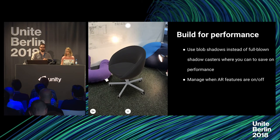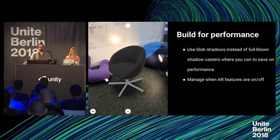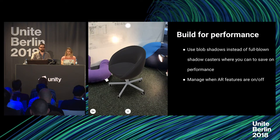One thing I'd recommend right off the bat: use blob shadows. If something doesn't have a shadow, it won't look anchored in the world. But in many cases, you don't need a perfect one-to-one shadow — you can just use a texture projected down onto a plane. That's really all you need to make something look grounded. Here you can see a complex chair with five little spokes, and a simple circular blob shadow is enough to make it seem like it belongs there.